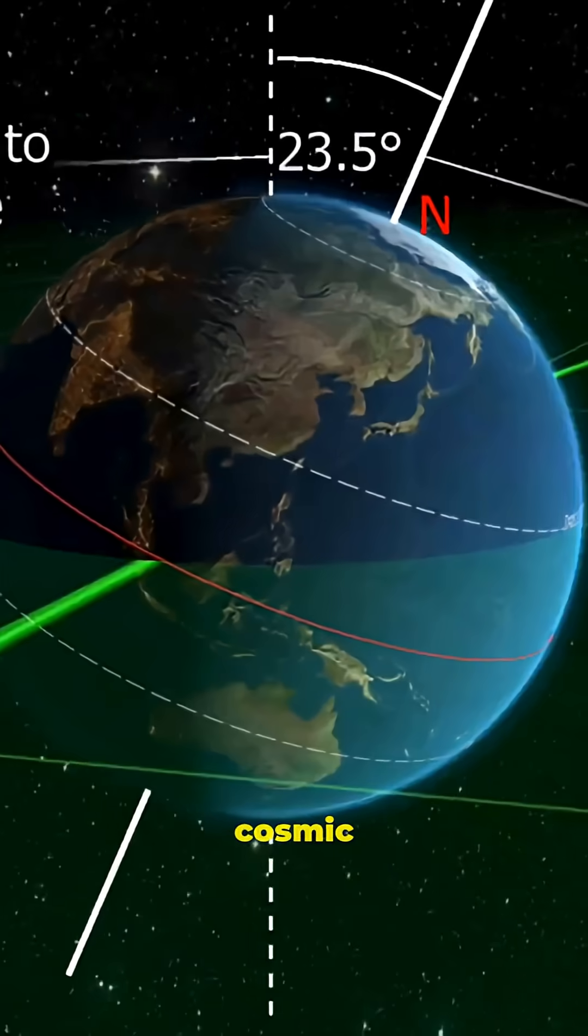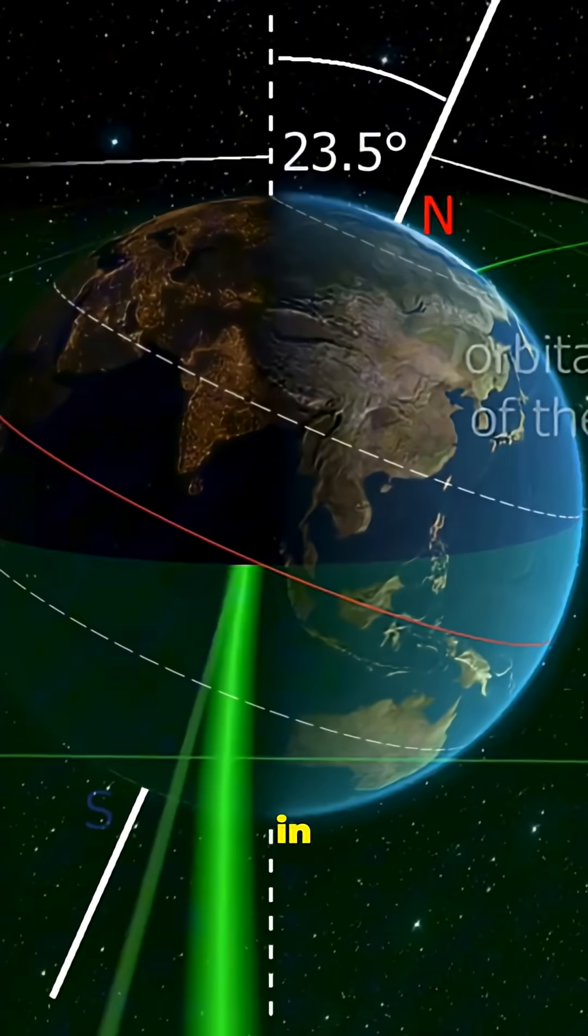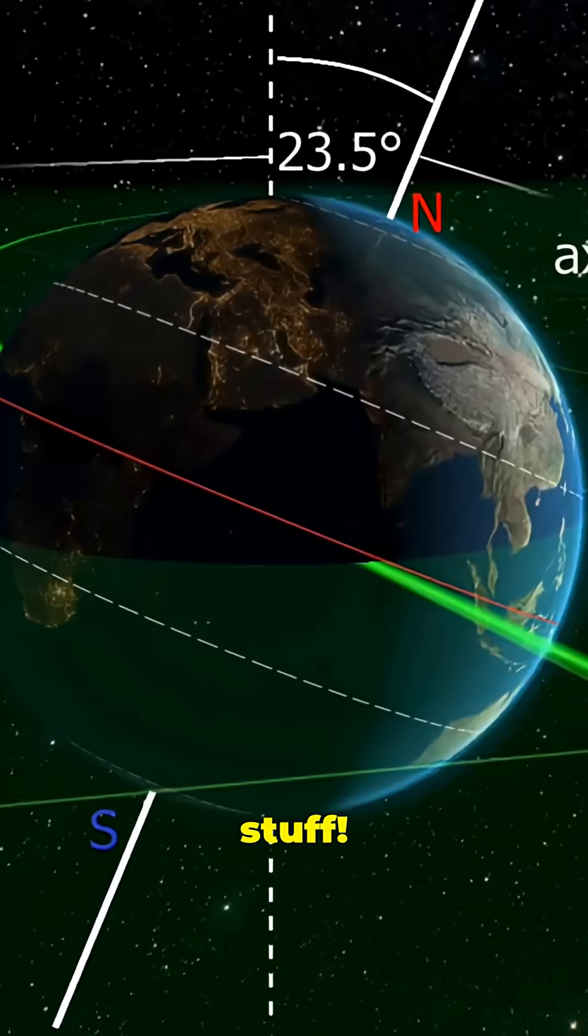That is why Earth does a kind of cosmic shimmy, a subtle wobble as it traces little loops in space. So what does this mean for us? This tiny wobble actually affects a bunch of stuff.